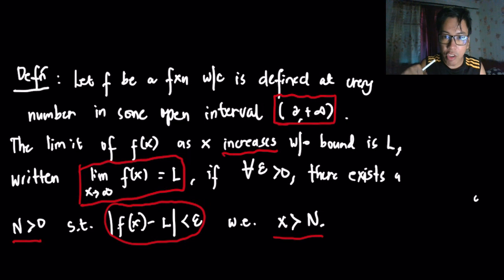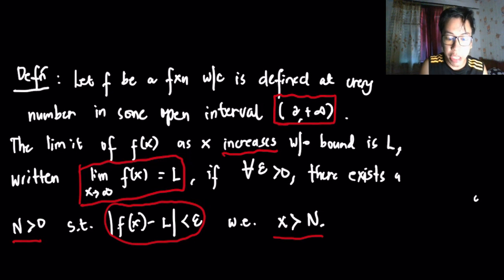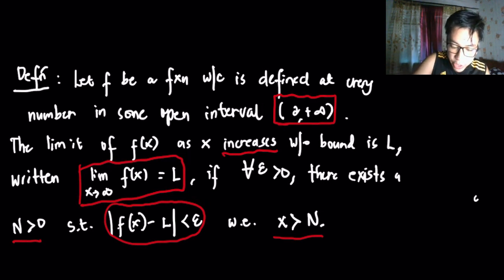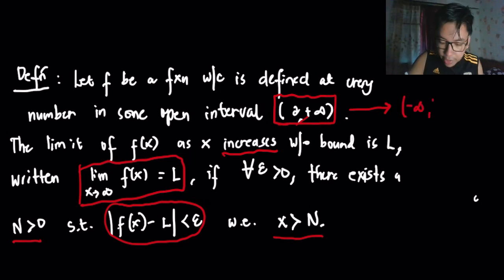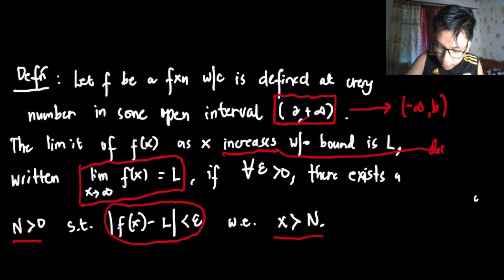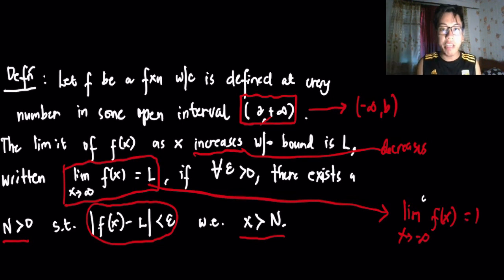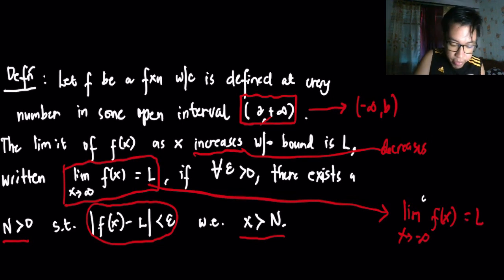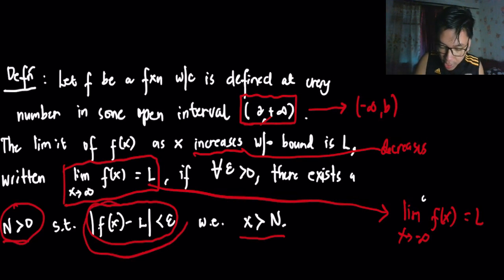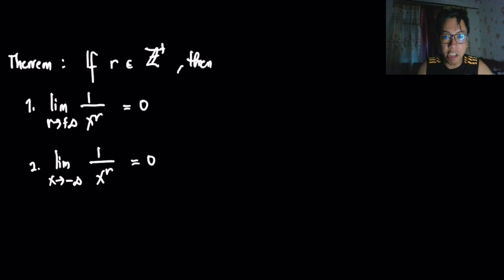The geometric interpretation is the same as presented in the previous video, which you can check in the thumbnail below. Analogously, for x decreasing without bound, we consider the interval (−∞, b) instead. In this case, the limit as x decreases without bound is L, and we write it the same way, but the condition requires x to be less than N.